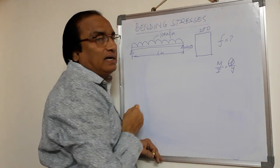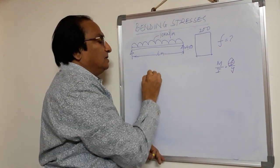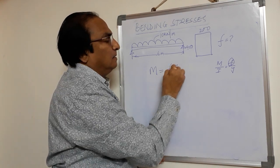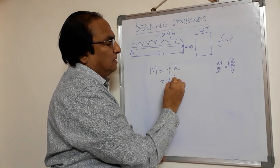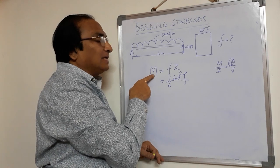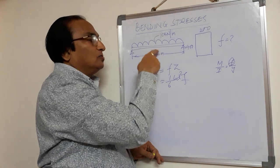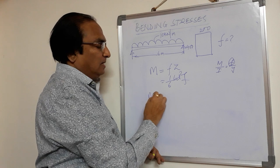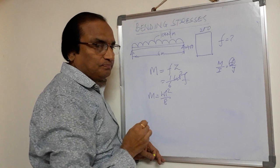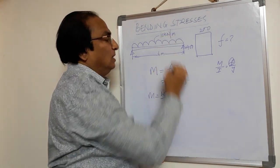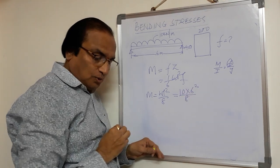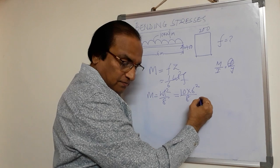For a rectangular section, bending moment M = F × Z = (1/6) × BD² × F. Here M can be determined — load and span are known. For a simply supported beam carrying UDL, the bending moment is M = WL²/8. This will be equal to 10 × 6² / 8. So you get the value of bending moment as 45 kNm.